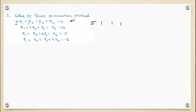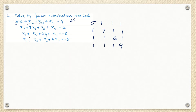The second row coefficients are 1, 7, 1, 1. For the third row: 1, 1, 6, 1. The fourth row has 1, 1, 1, 4. These are the coefficients of the equations from the left hand side. I have written them down in one matrix format.